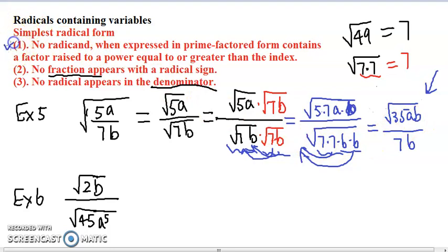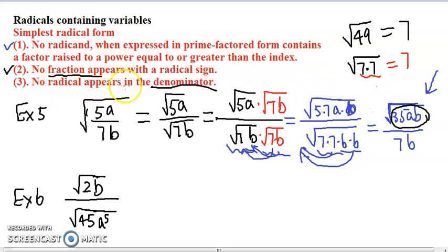So it meets the first requirement. Second requirement: no fraction appears with the radical sign. With the radical sign we have 35ab — no fractions. Although the whole thing is a fraction, rule number two only applies to what is under the radical sign. Rule number three says no radical appears in the denominator. In this whole fraction the denominator is 7b, and there's no radical sign in the denominator. So it also meets the third rule — this is the simplest form.